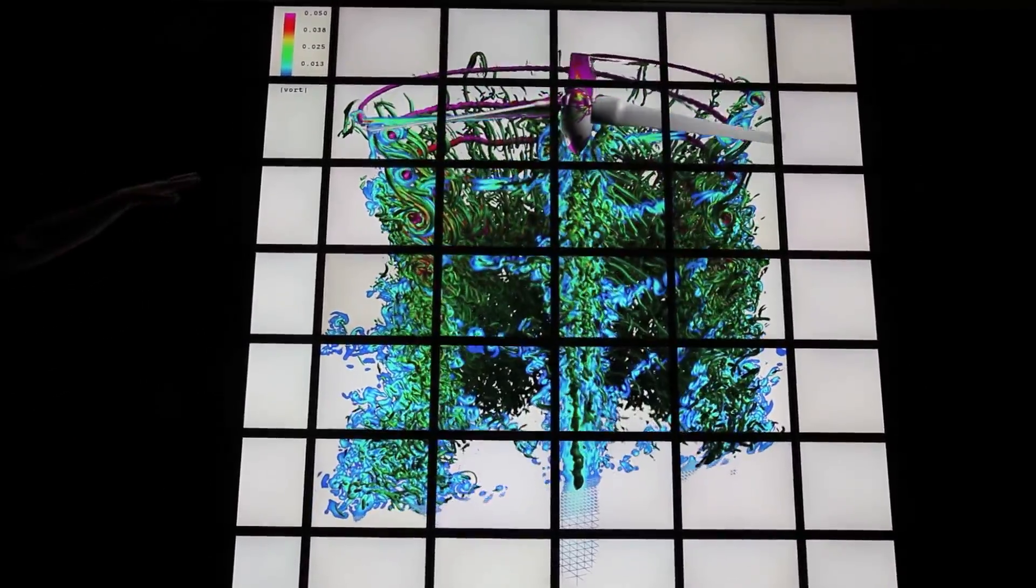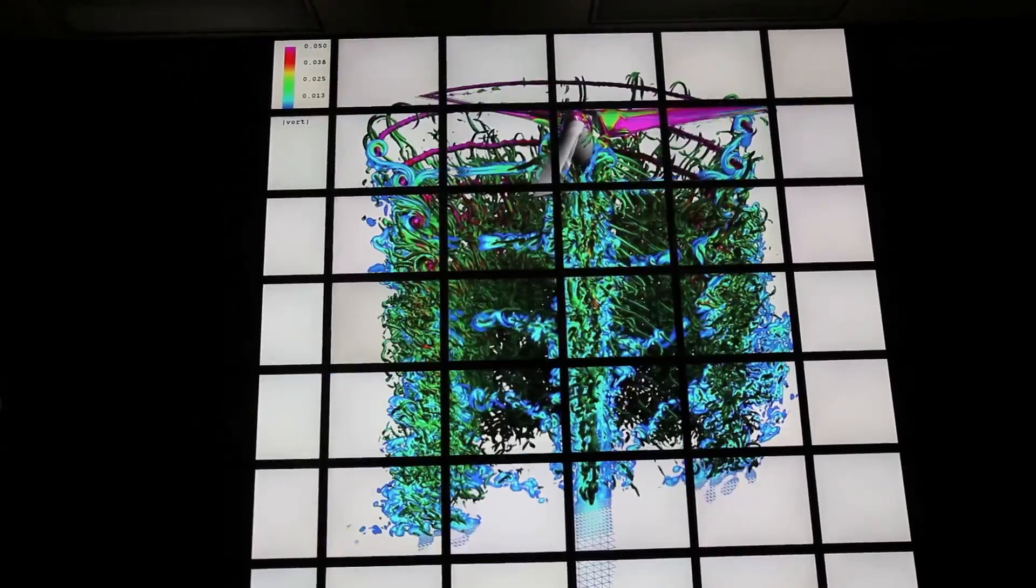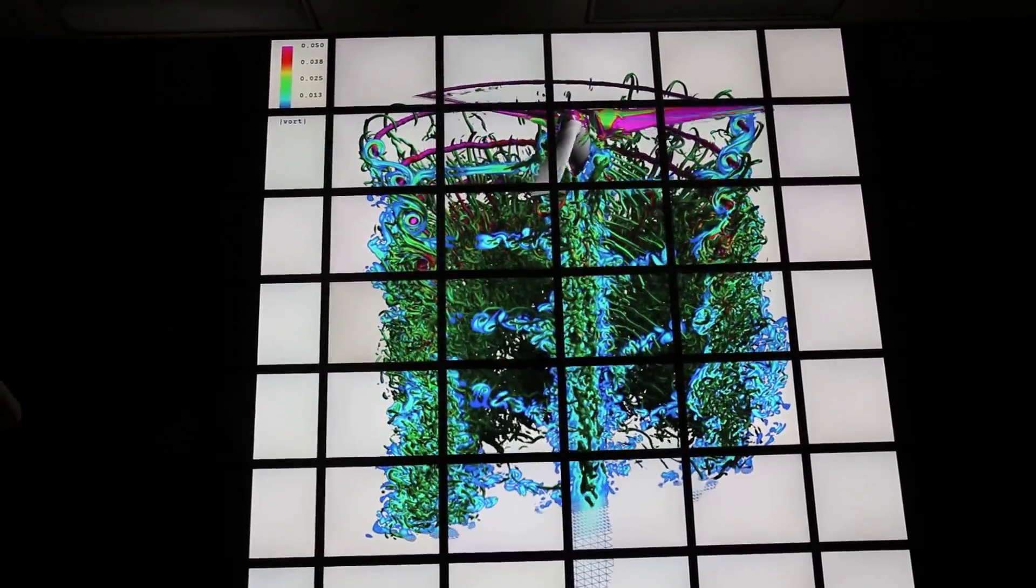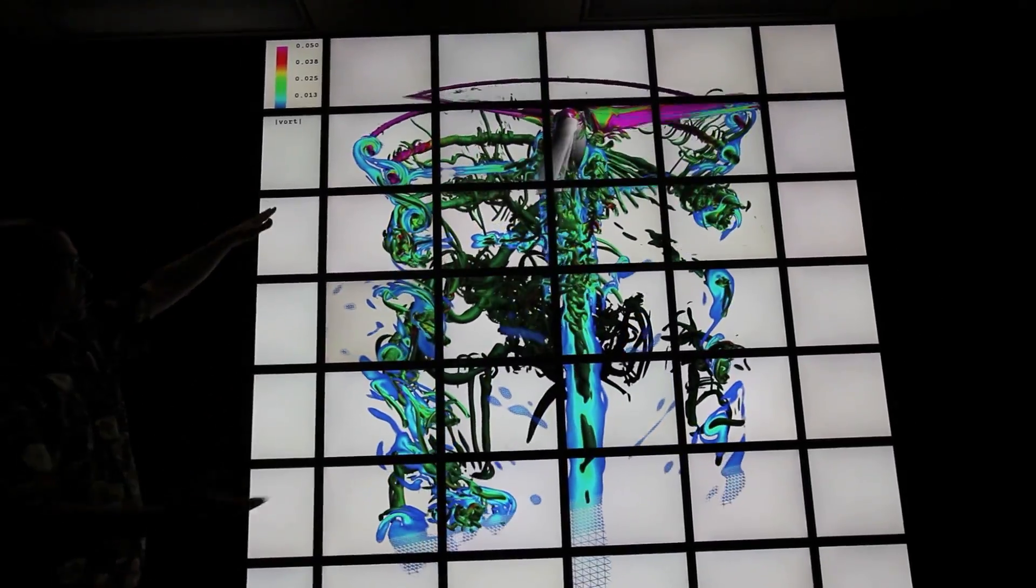Showing the flow associated with V22 rotor system without the V22. This illustrates all the vortices off the tip. So the features we're seeing are vortices.